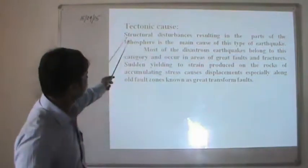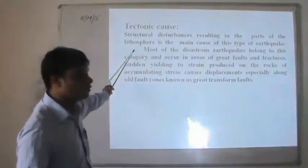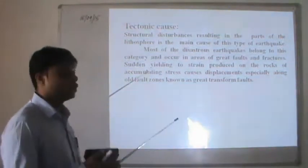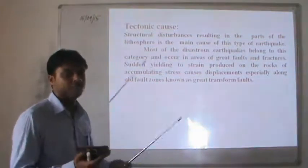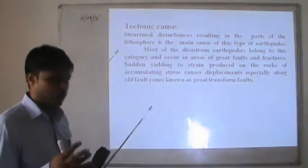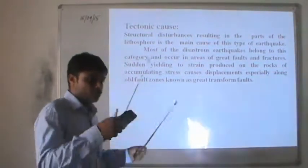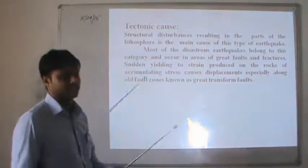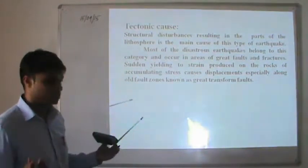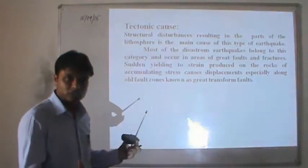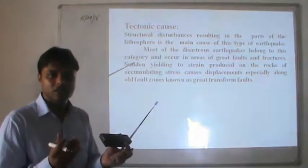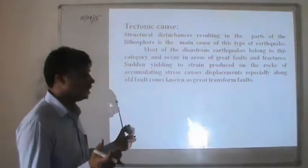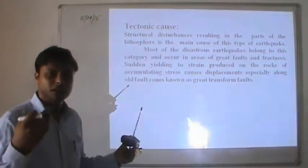Tectonic causes: Structural disturbances relating to the parts of the lithosphere are the main cause of tectonic earthquakes. There are 12 tectonic plates — 6 major and 6 minor. The major plates differentiate between the continents. Most disasters belong to this category because when tectonic plates collide or strike each other, energy is released and converted into earthquake activity.